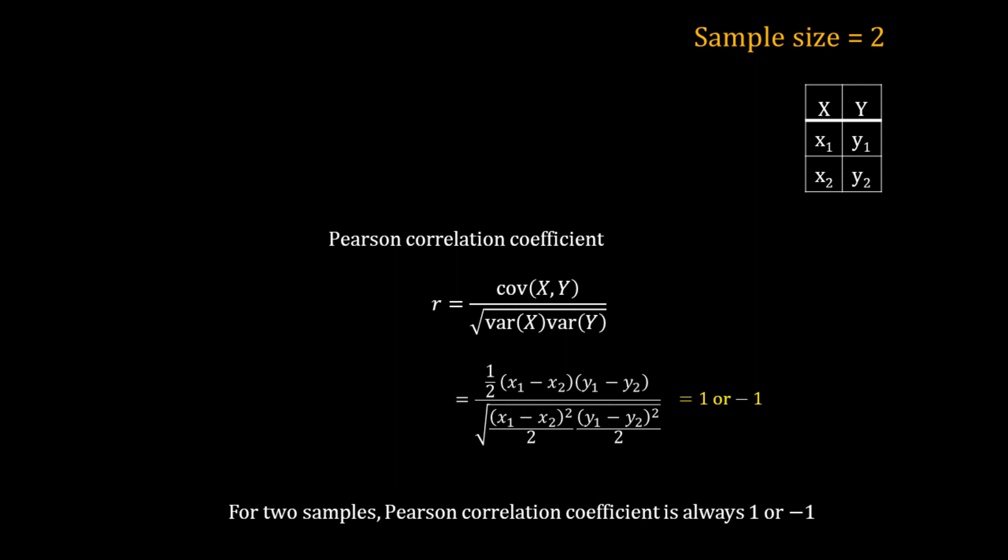The denominator is always positive, but the numerator could be either positive or negative depending upon the values of x1, x2, y1, and y2. That means for any values of x1, x2, y1, y2, the Pearson correlation coefficient between x and y will always be either plus 1 or minus 1. So when our sample size is 2, using the Pearson correlation coefficient is meaningless. What about a bigger sample size — 3, 4, 40?